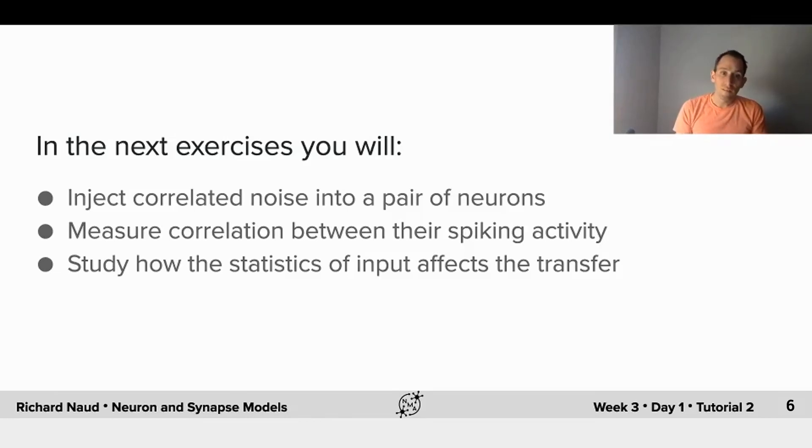So in the next exercises, you will explore just that for the correlation between two units. You will inject correlated noise in a pair of neurons, measure the correlation between their spiking activity, and study how the statistics of the responses is affected by the statistics of the inputs.